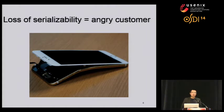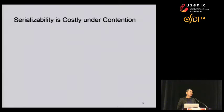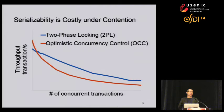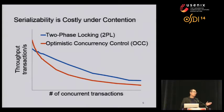From this example, we can say that if we don't want angry customers, it's a good idea to provide serializability. The problem with serializability is that it does not come for nothing. The concurrency control in distributed systems can be very costly if there is a lot of contention going on in the system. Traditionally, we have two popular protocols: two-phase locking and optimistic concurrency control. As shown in this representative figure, with both of these protocols, the throughput of the system will drop quickly as the amount of contention increases.